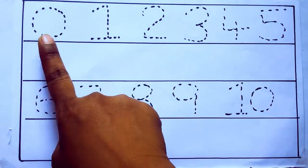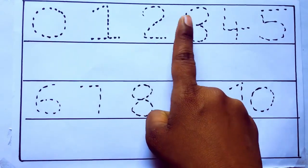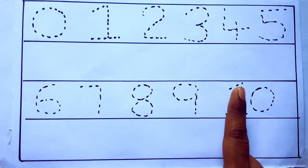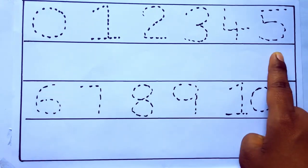0 to 10: 0, 1, 2, 3, 4, 5, 6, 7, 8, 9, 10, and rewriting the numbers.